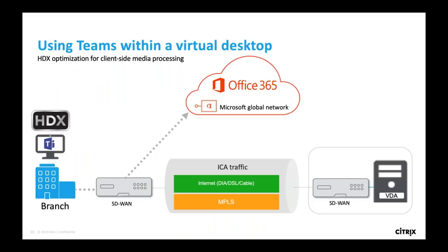Another benefit: Citrix SD-WAN can aggregate links together for higher bandwidth and apply QoS. For Office 365, specifically around Teams or Skype for Business, HDX traffic is typically rendered server-side in VDI. With Teams, Citrix has the capability to do client-side rendering, which means the traffic originates at the client and can use the API to send it out directly to Office 365 — rather than going server-side through a geographically different data center first.